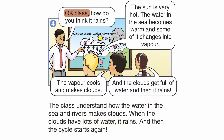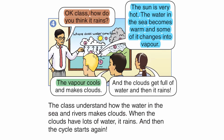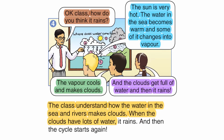Mr Ali asks, 'How do you think it rains?' The sun is very hot. The water in the sea becomes warm, and some of it changes into vapour. The vapour cools and makes clouds. The clouds get full of water, and then it rains. The class understand how the water in the sea and rivers makes clouds. When the clouds have lots of water, it rains, and then the cycle starts again.